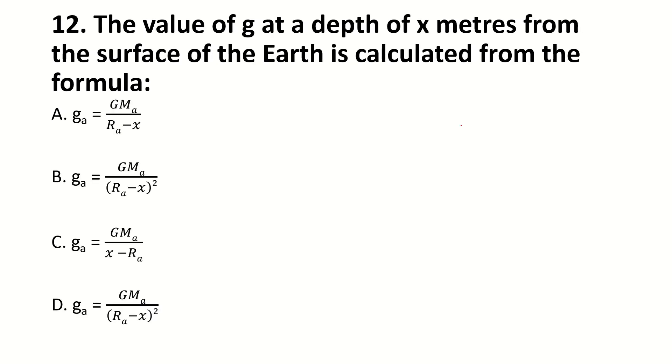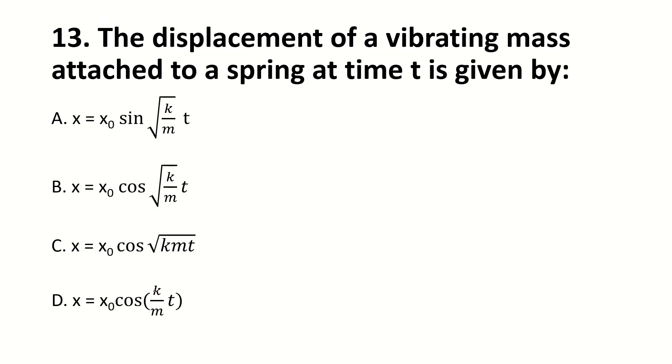The value of g at a depth of x meters in the surface of earth is calculated from the formula of dash. Right answer is g' = g(R/(R - x))². The displacement of a vibrating mass attached to spring at a time t is given by dash. Right answer is x = x₀ cos(√(k/m) × t).